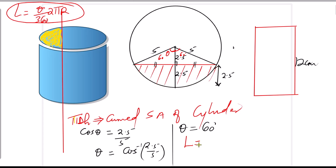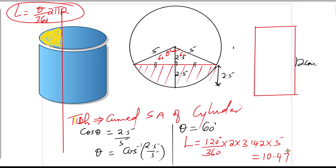The length of the arc is given by theta over 360 multiplied by 2 pi r. Using angle 120 degrees divided by 360, times 2 times pi (3.142), times radius 5 — using a calculator this gives 10.47 cm. So this arc length is 10.47 centimeters.